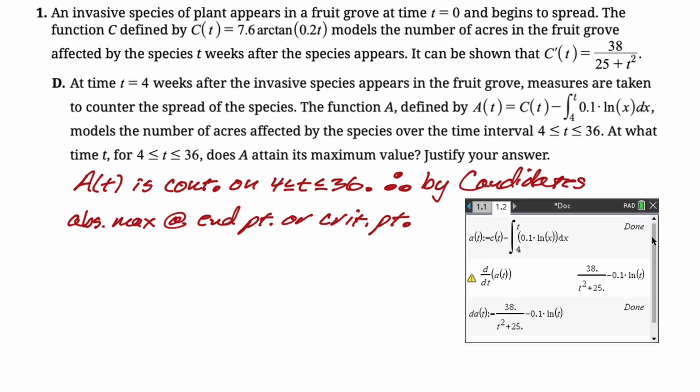So I defined the function, and then I found the derivative. And then what I did was I graphed it. So A prime of T equals zero. I'm going to end up getting 11.442. I both graphed it and I used solve.